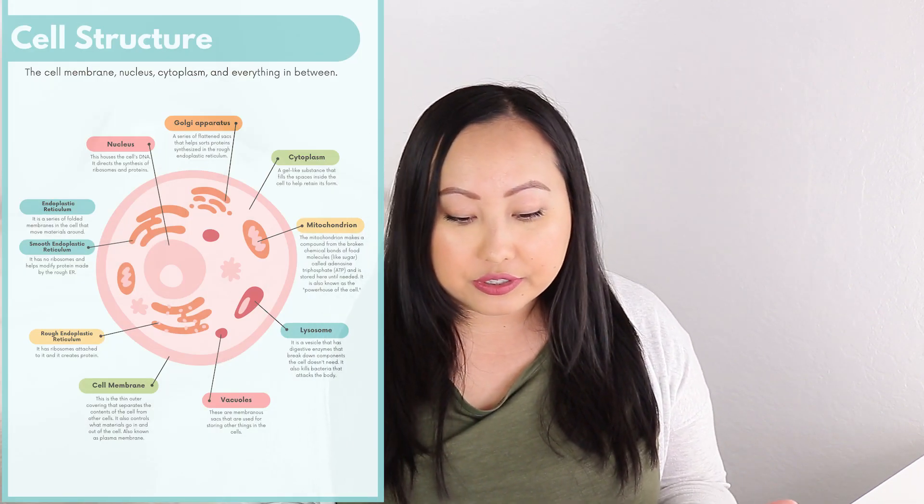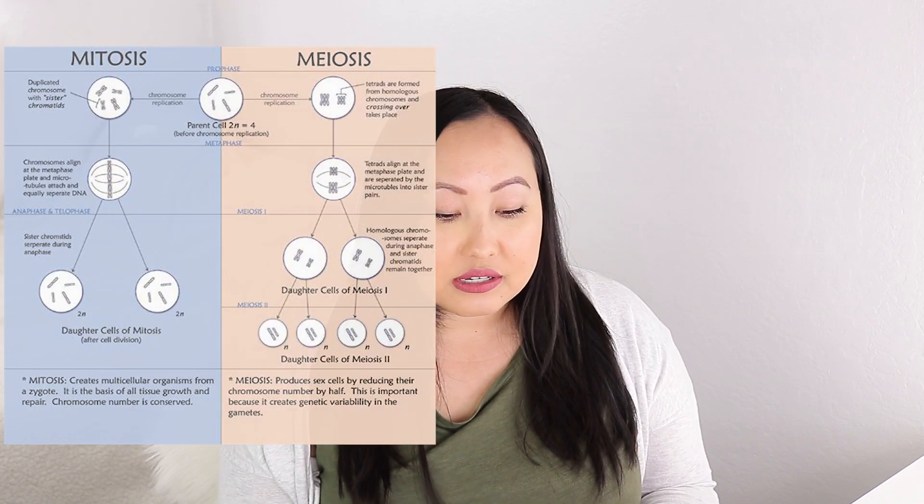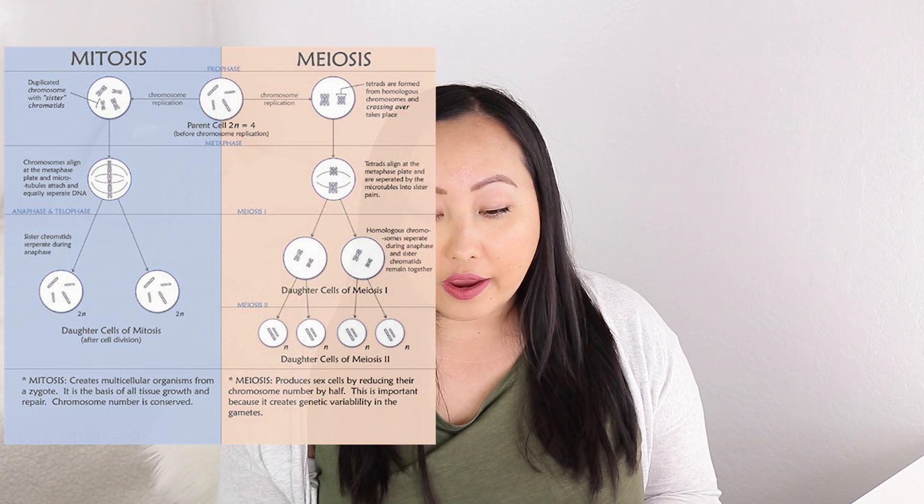For general biology, you want to understand DNA and RNA — what kinds of nucleic acids they are and what makes them up. You also want to focus on the different organelles that make up a cell — for example, the mitochondria, the nucleus, the Golgi apparatus — what their functions are and what they do in a cell. You also want to focus on mitosis and meiosis: know the difference, where they occur, and the different phases of each process. You'll also want to know the scientific method, its different steps, and be able to differentiate an independent versus a dependent variable.